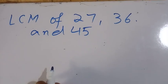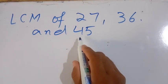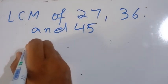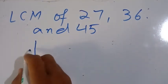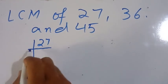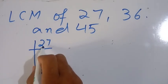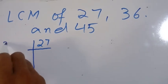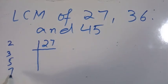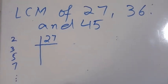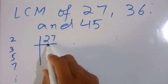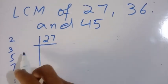Find the LCM of 27, 36, and 45 by the prime factorization method. First, we will find the prime factors of 27. We will divide 27 by prime numbers — 2, 3, 5, 7. These are all the prime numbers, so first of all we will divide 27 by the smallest prime number.